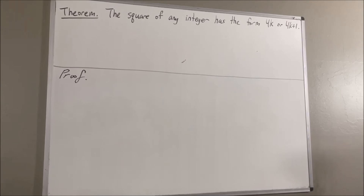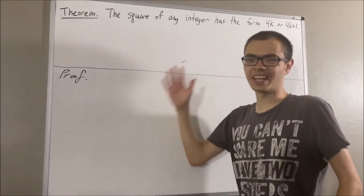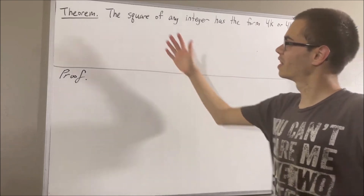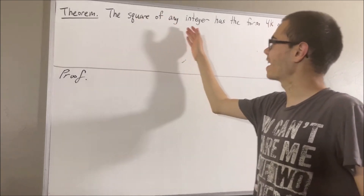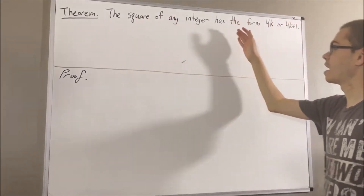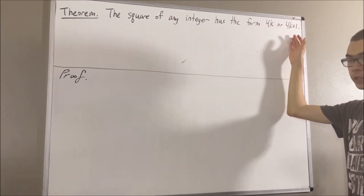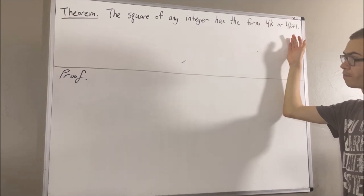Hello! In this video, we are going to prove the following theorem: the square of any integer has the form 4k or 4k plus 1.